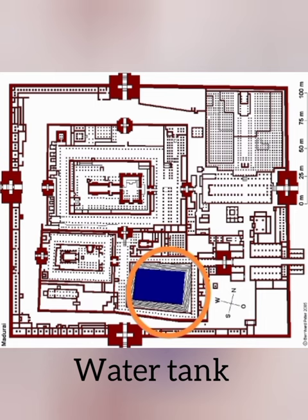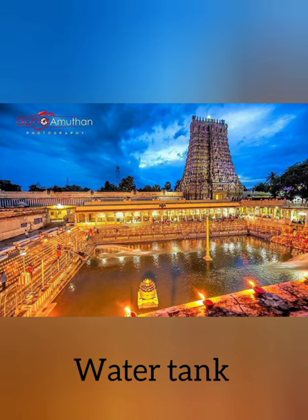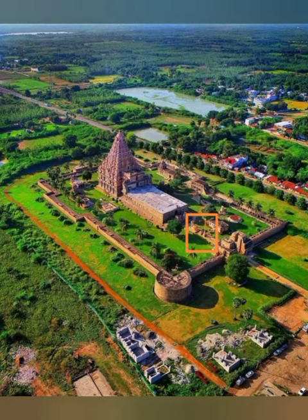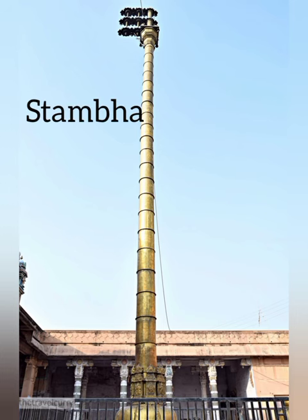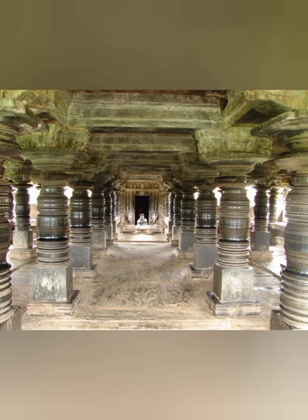It is common to find a large water reservoir, or a temple tank, enclosed within the complex. In the temple complex there is one Nandine and one Stamba in front of the main temple. Stamba is a special monolithic and freestanding pillar.